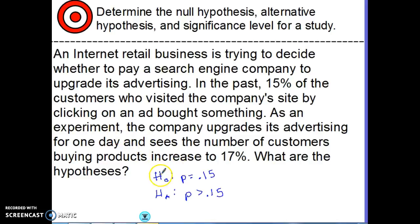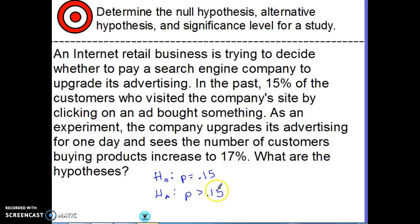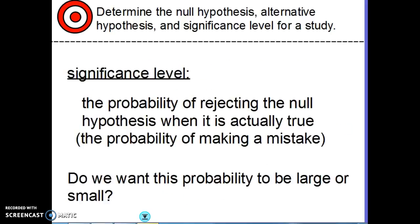To review: for this situation, the null hypothesis — the no-change hypothesis — is that the number of people buying things is still at 15%. The alternative hypothesis is that perhaps the advertising really is doing something and the number of people buying things is actually greater than 15%.